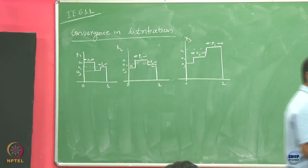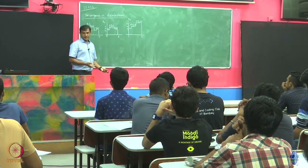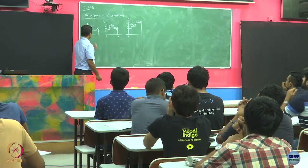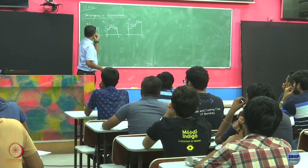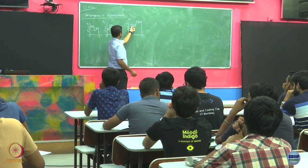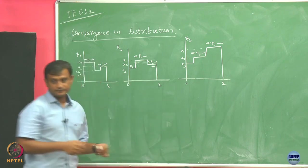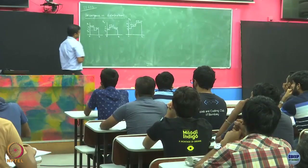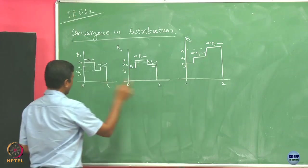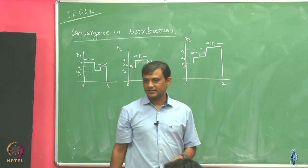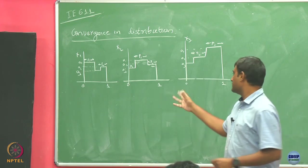All of them take the same three values, but the intervals on which they take these values are different. For example, x2 takes value p2 on a different interval than x1. Now, let us say x4, x5, x7, x8, x9, x10, x11 — my random variables are periodic versions of this. So what we mean is x_{n+3} = x_n for all n.